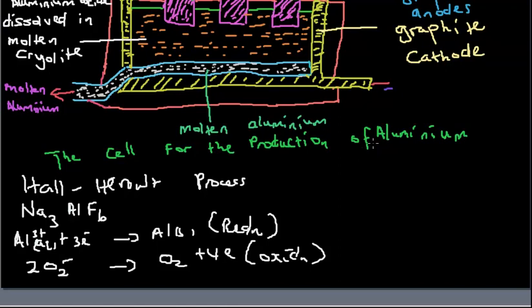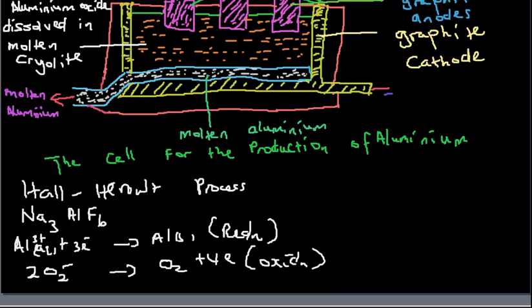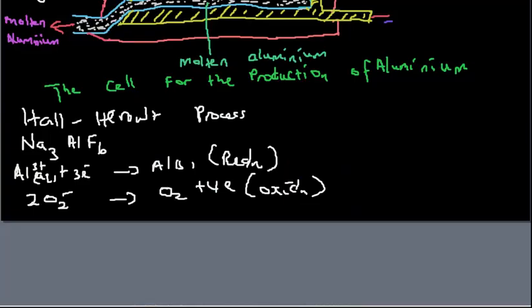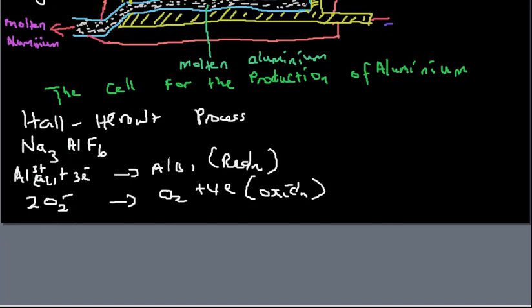To summarize the industrial preparation of aluminum: aluminum collects at the cathode where reduction occurs, and oxidation occurs at the anode. We have Al³⁺ and O²⁻ ions. At the end, we have the recovery of aluminum and its application in everyday uses.